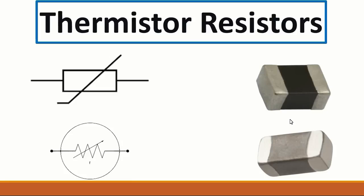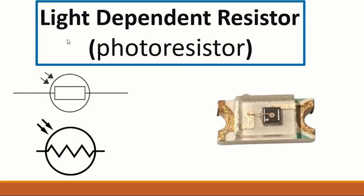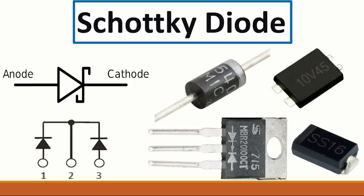Then we have the terminal resistors. Here we have two symbols — it could be this one or this one with a circle and a 'T'. Then we have the light dependent resistor (LDR). It is the opposite of the LED — for the LED the arrows go outward, and for the LDR the arrows go inward. We also call it a photo resistor or LDR.